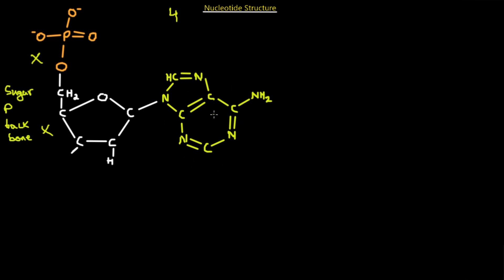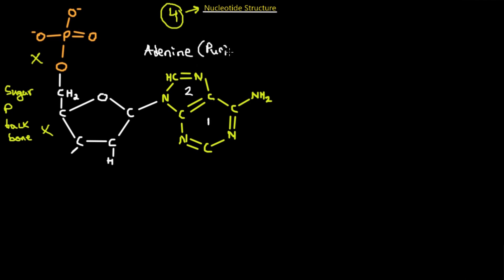The variable part is the nitrogenous base, and there are four different nitrogenous bases, meaning there are four different nucleotides. The first one is adenine. As you can see, it's composed of alternating carbon and nitrogen — hence the name nitrogenous base — and it has two rings. There are two nitrogenous bases that have two rings and two that have just one ring. Adenine is called a purine because it has two rings.